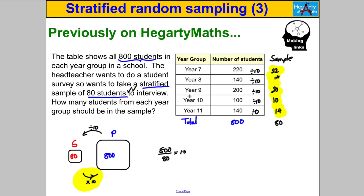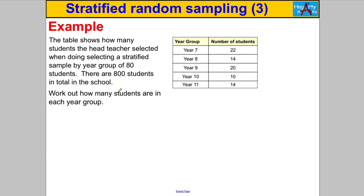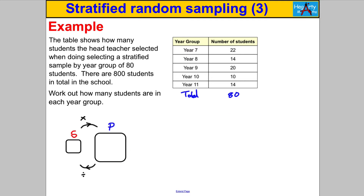Let's try a similar question — pause the video and have a go. A head teacher selected 80 students in a stratified random sample, and there are 800 students in total in the school. Drawing our picture: sample box = 80, population box = 800. 800 divided by 80 gives us 10, so the population is 10 times bigger. Going from sample to population you multiply by 10; going from population to sample you divide by 10.